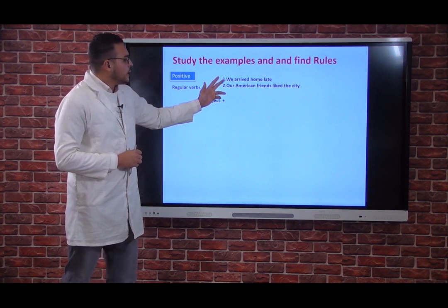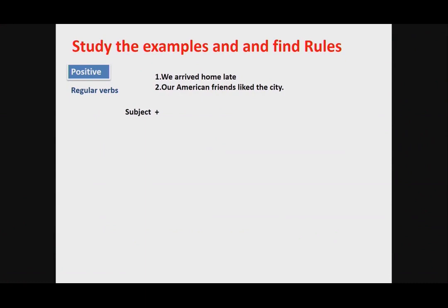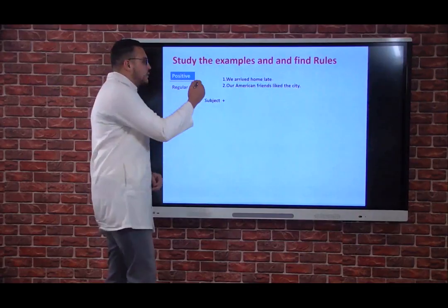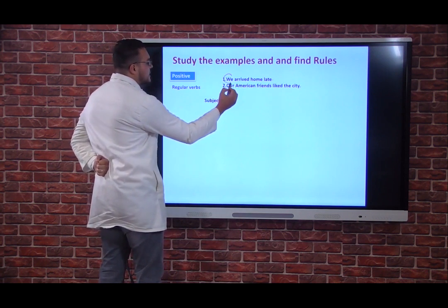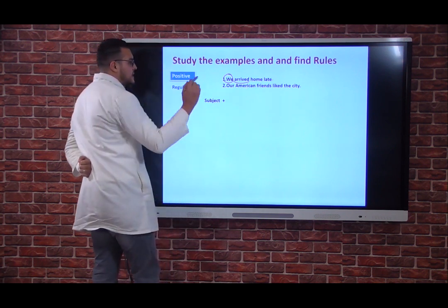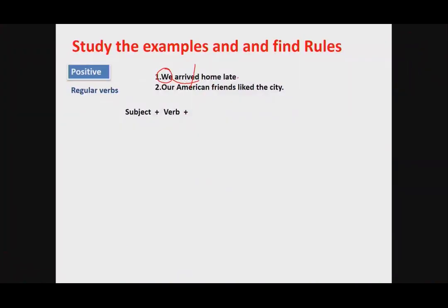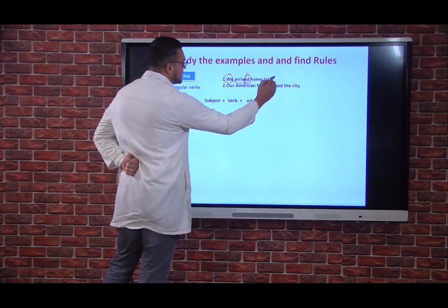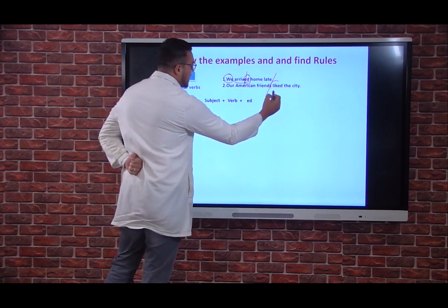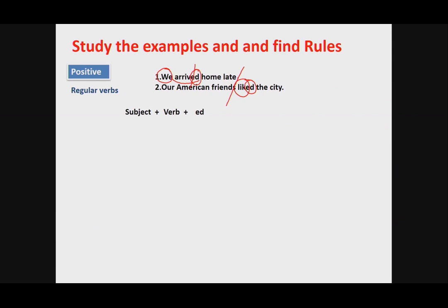Now study the following examples to fill in the chart. Example one: we arrived home late. Example two: our American friends liked the city. In example one, the subject pronoun is 'we,' and we have the verb 'to arrive' plus -ed to make the simple past form. In example two: our American friends — the subject — plus 'like' plus -ed. The pattern is: subject pronoun + verb + -ed to make the simple past of regular verbs.